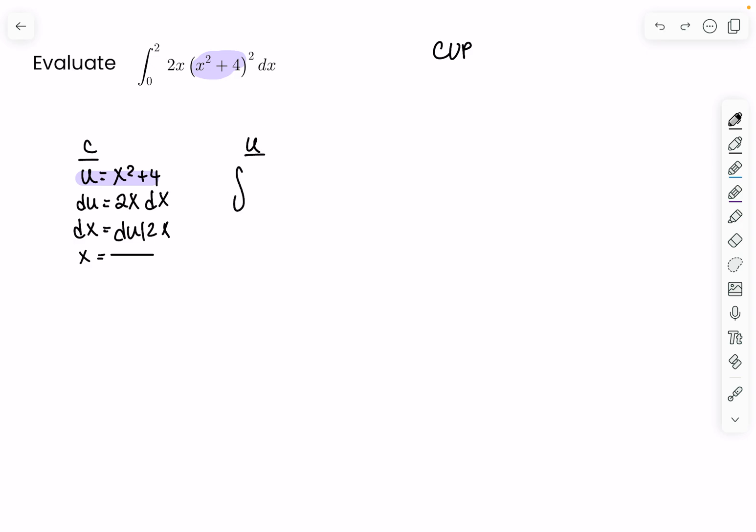So the integral, right, and this is where you should remember. If you're going to put everything in terms of u, that doesn't just include the x and the dx. It includes the bounds too, because the bounds are x is equal to 0 and x is equal to 2.